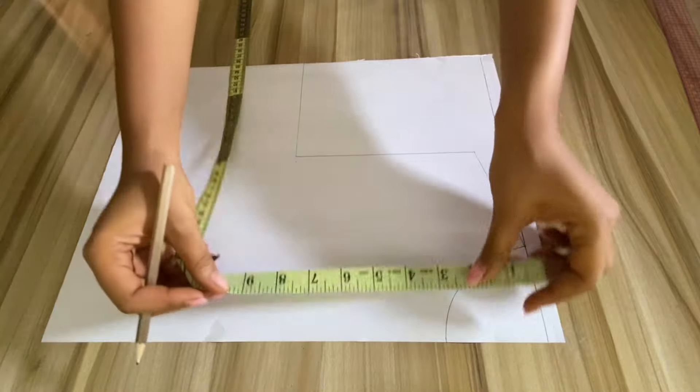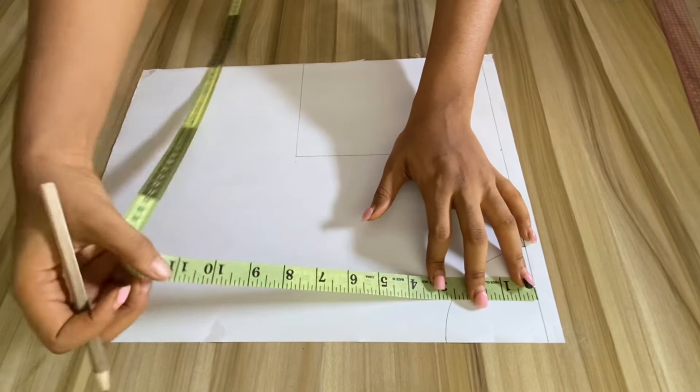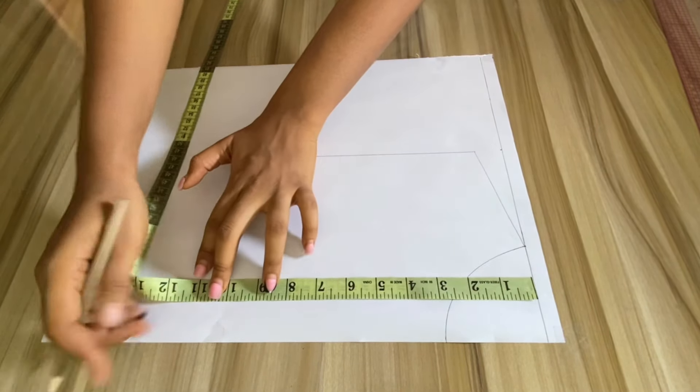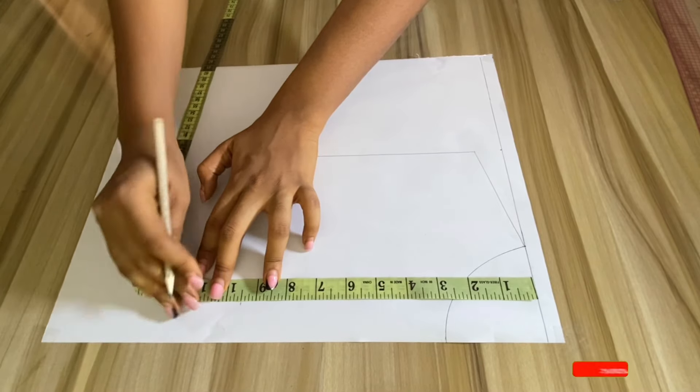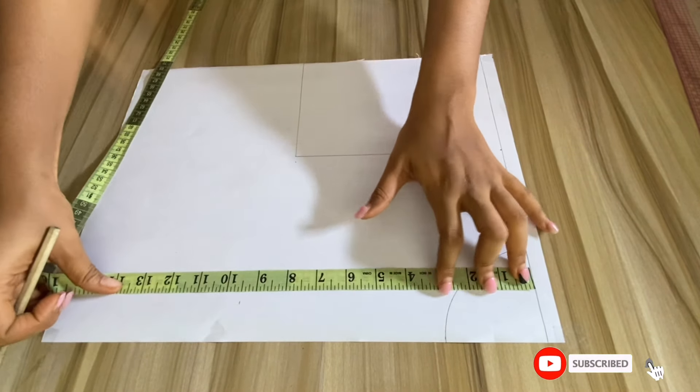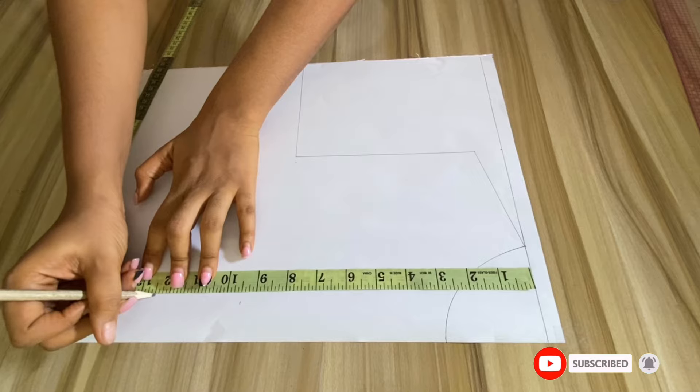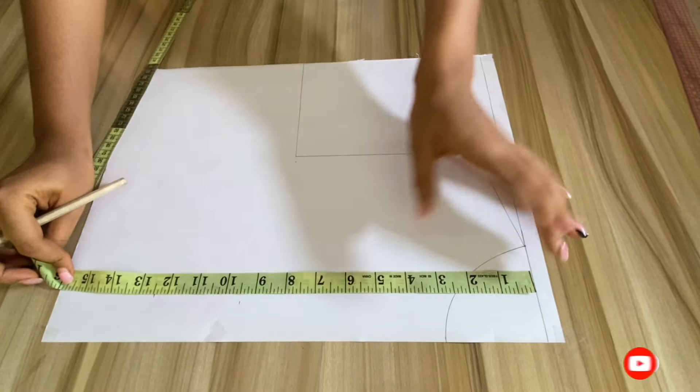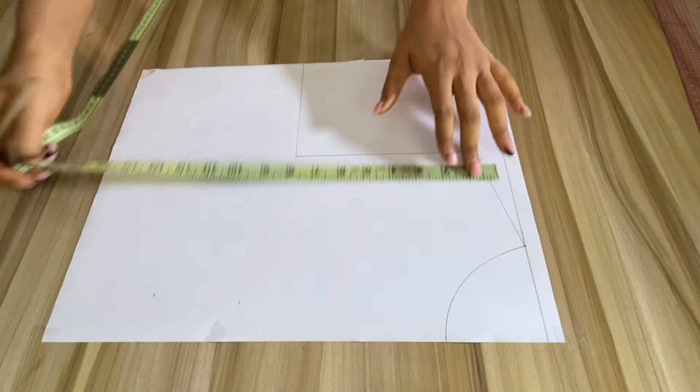I'm going ahead to take my bust measurement, which is 9.5 inches, and my under bust, 12.5, and the full length is 16 inches. I'll just be marking the point accordingly and ruling it out.